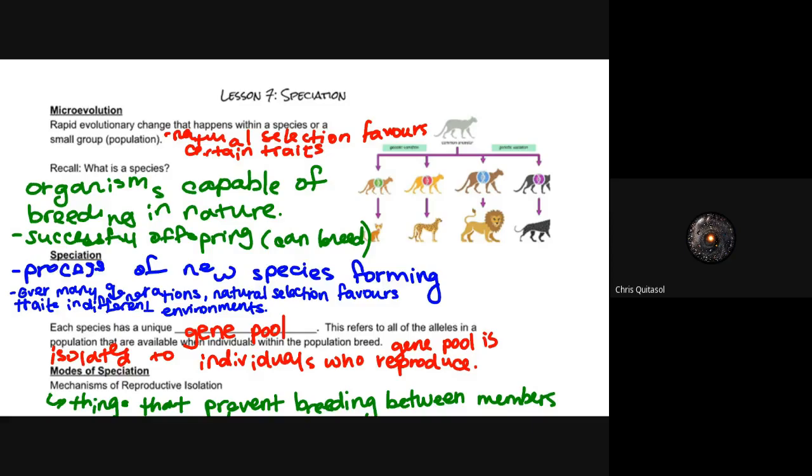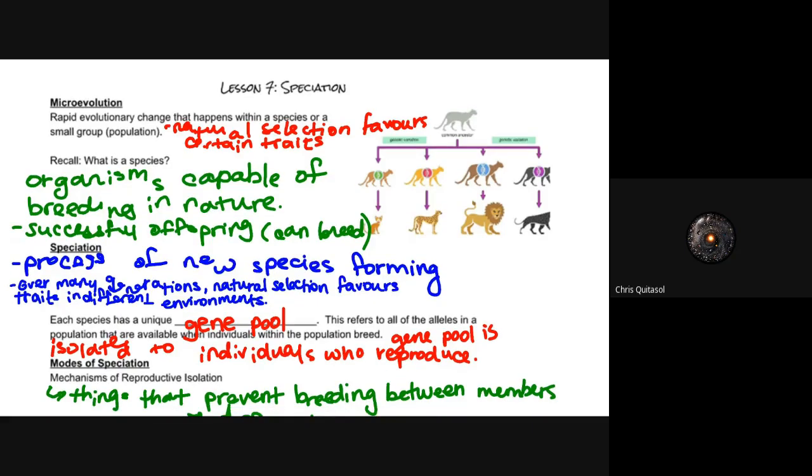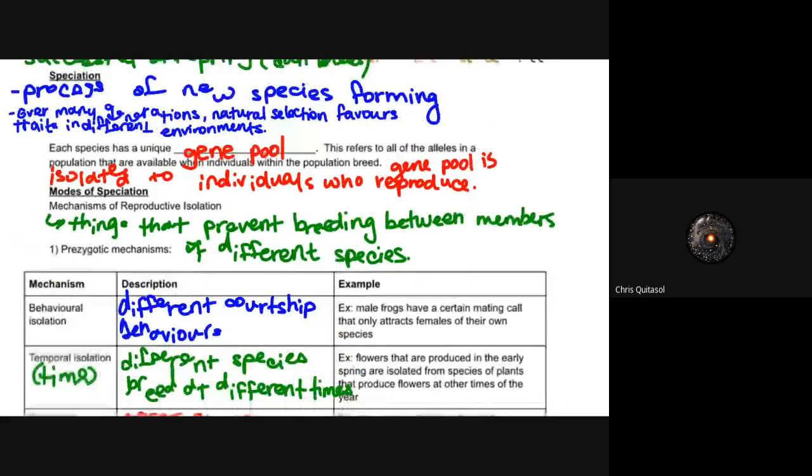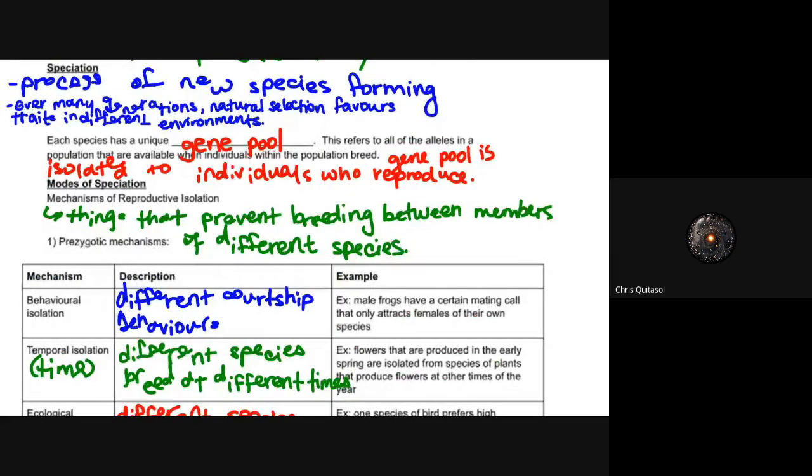Natural selection favors those traits in different environments. We have to consider the concept of gene pool, where the gene pool is the alleles of that species in a population that are available when they breed. The gene pool is isolated to that specific group or species.